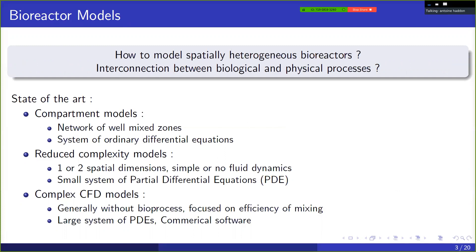And so this leads us to consider how can we model spatially heterogeneous bioreactors and what's really the interconnection between the biological and the physical processes at play. There are three types of models here that have been developed. The first types of models developed were compartment models. So the bioreactor is considered to be made up of zones that are well mixed. And so the bioreactor is seen as a network or an interconnection of well-mixed zones. And so the advantage is that this leads to a system of ordinary differential equations, which is simpler than the other types of models that are based on partial differential equations.